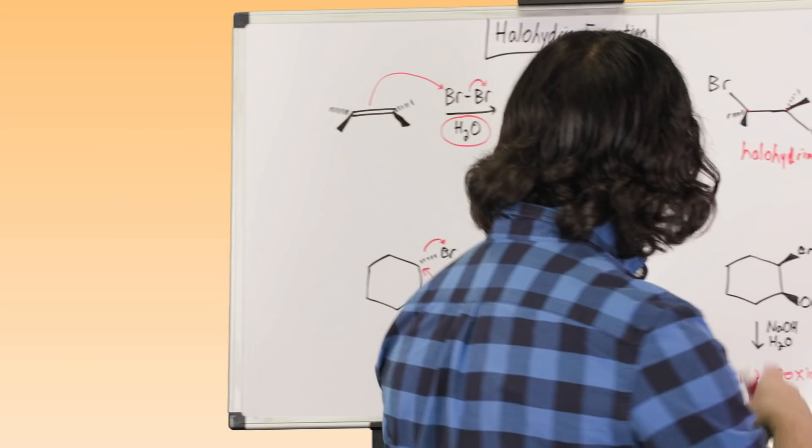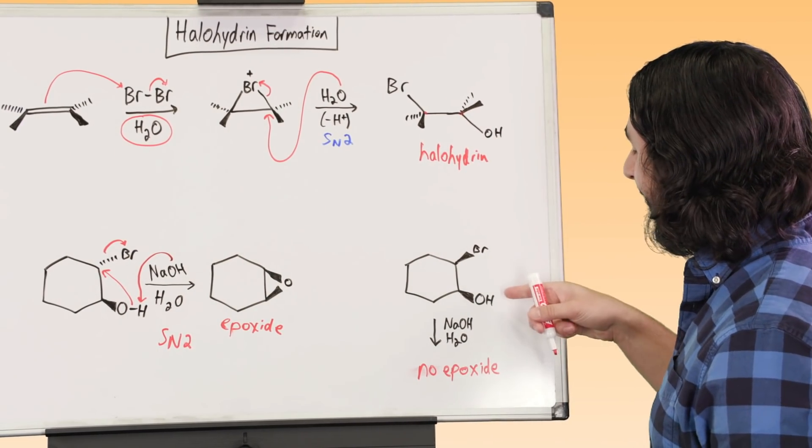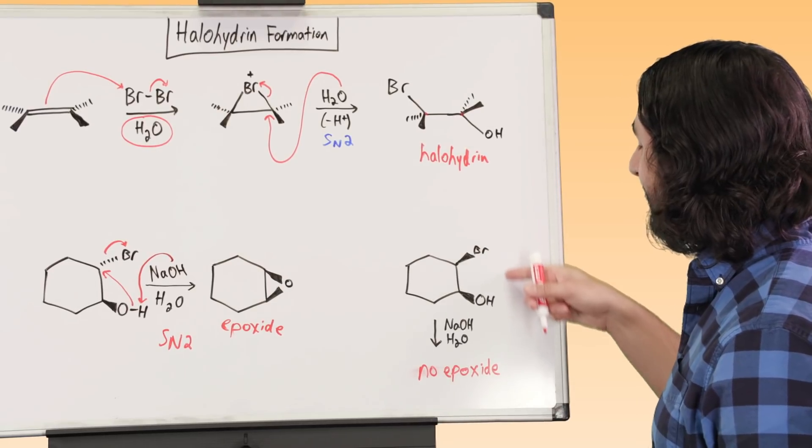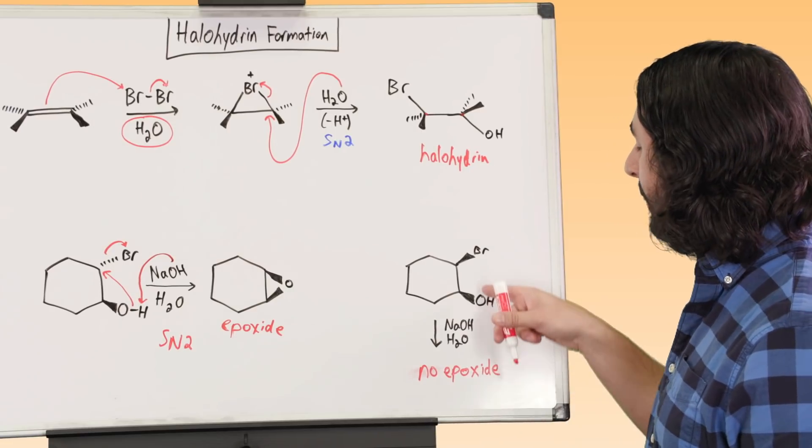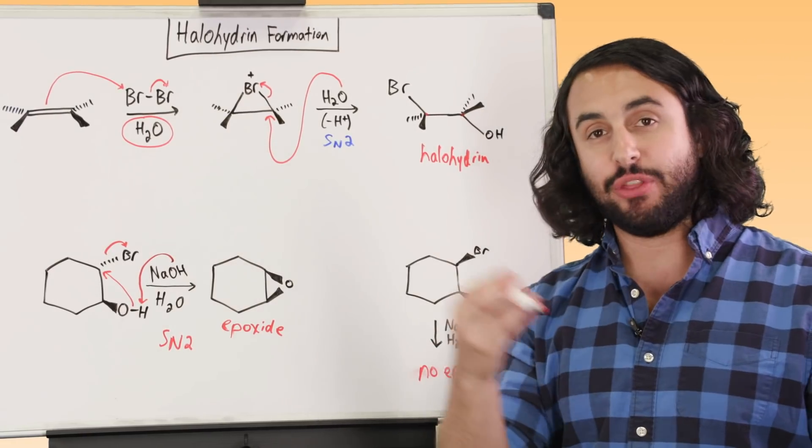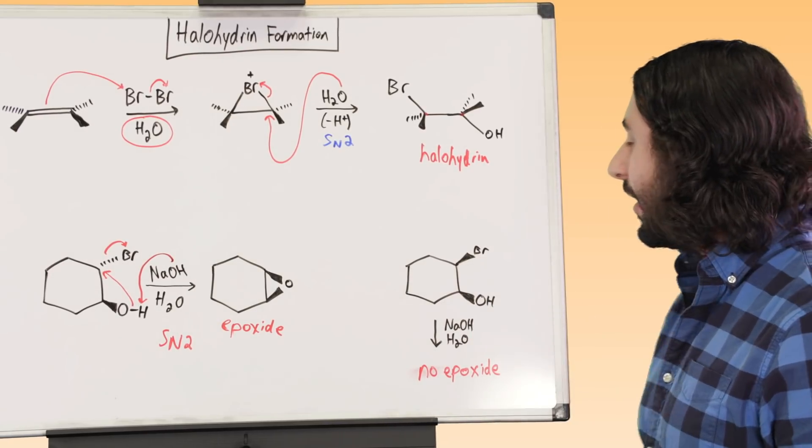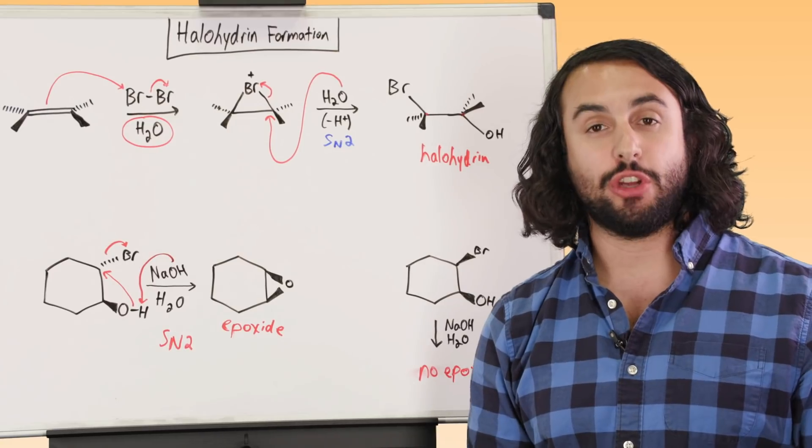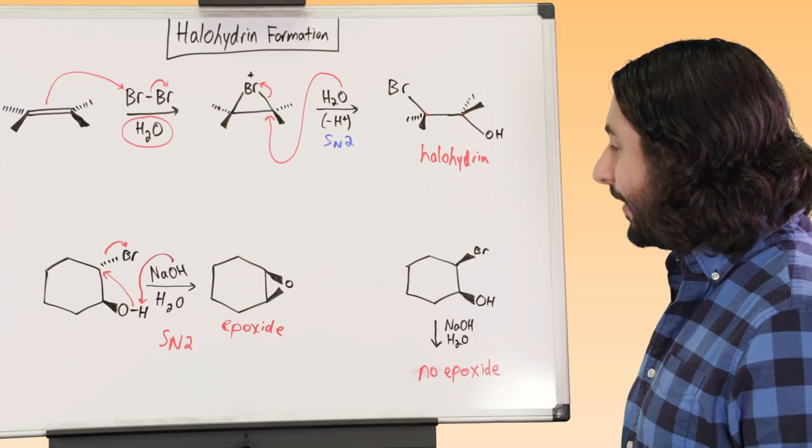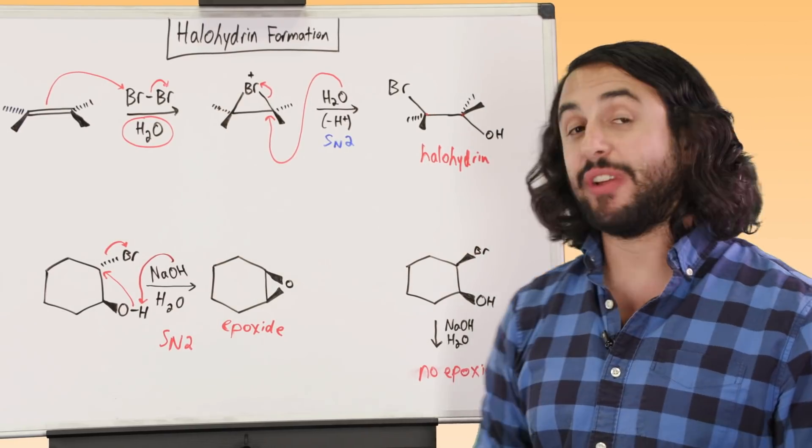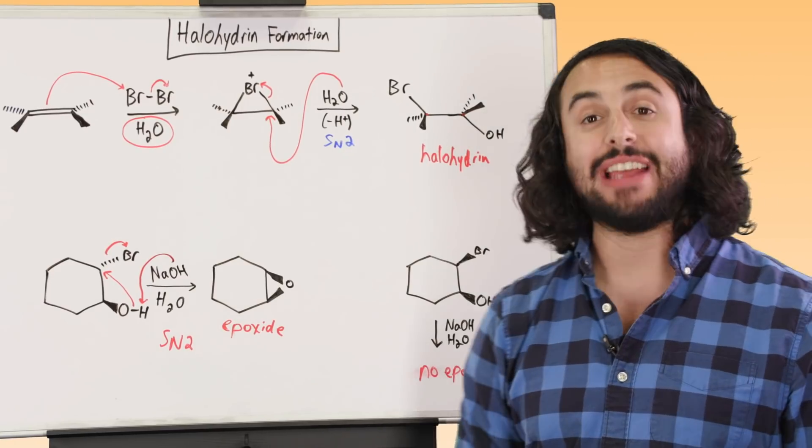So we will get the epoxide. On the other hand over here, if we have the cis halohydrin, so we do have the bromine and the hydroxyl on the same side of the molecule, if we use the exact same conditions, we're not going to get the epoxide. Because the thing is that the hydroxyl is sticking out this way, it is not going to be able to come from behind and attack this carbon in the correct orientation. And so this is actually not going to react, we'll not get the epoxide. So that's the definition of a halohydrin, that is the mechanism to get a halohydrin, and one thing that a halohydrin can do.